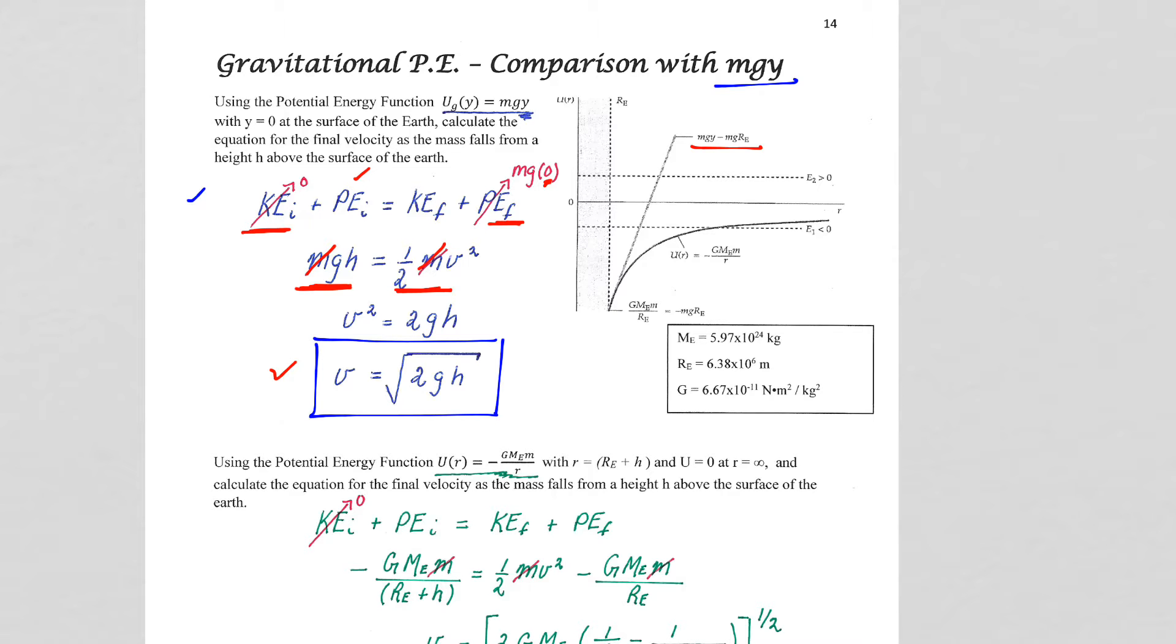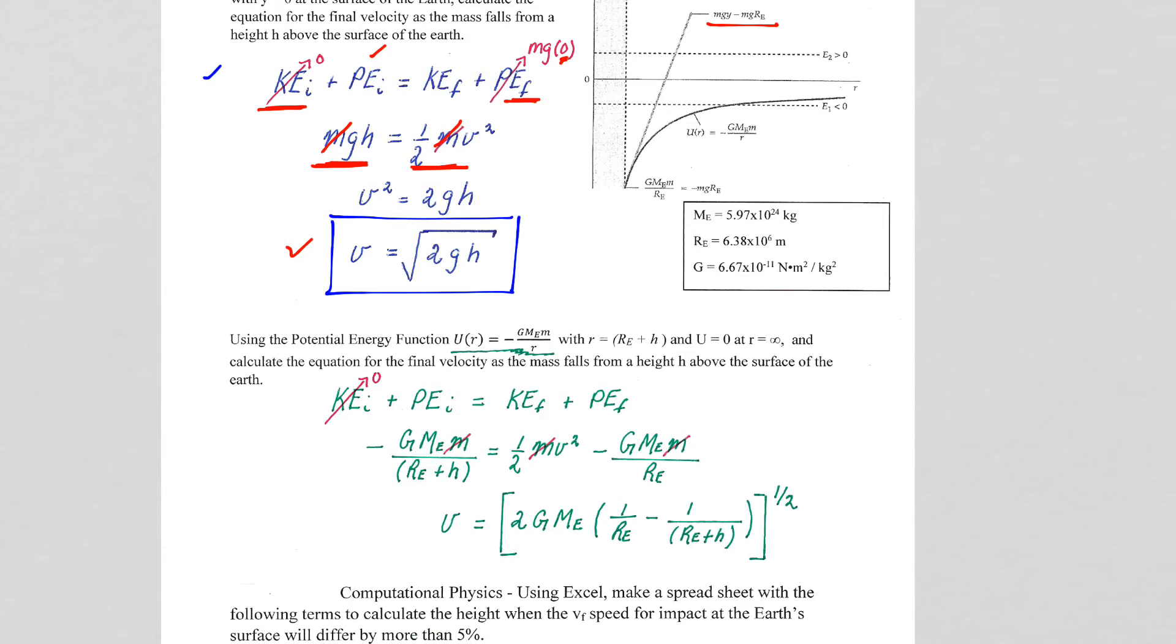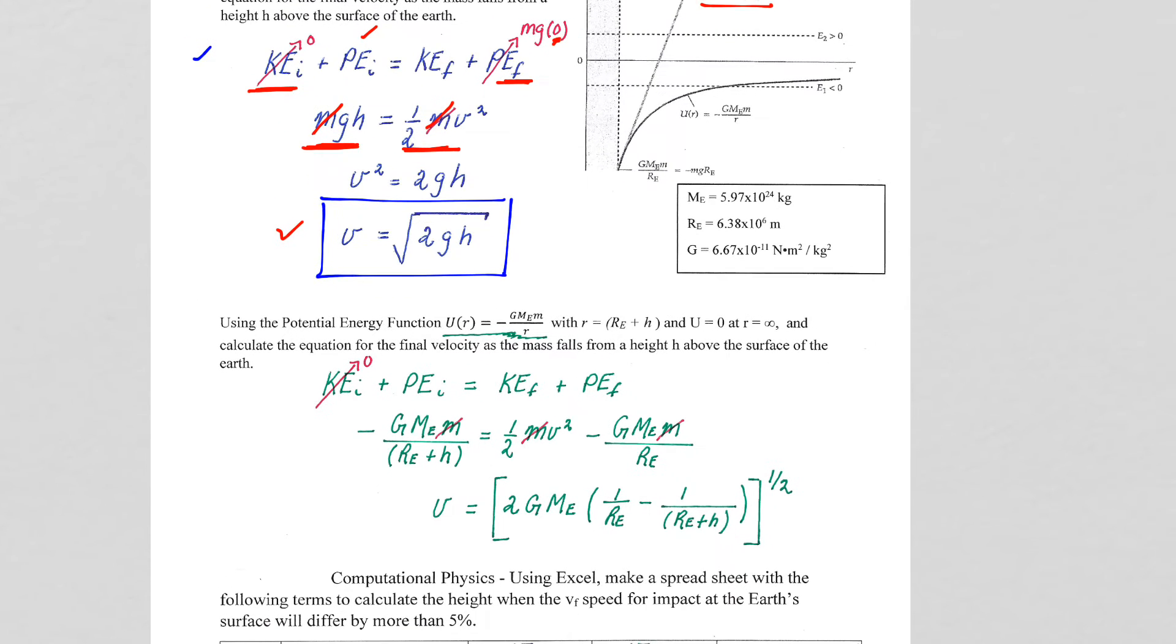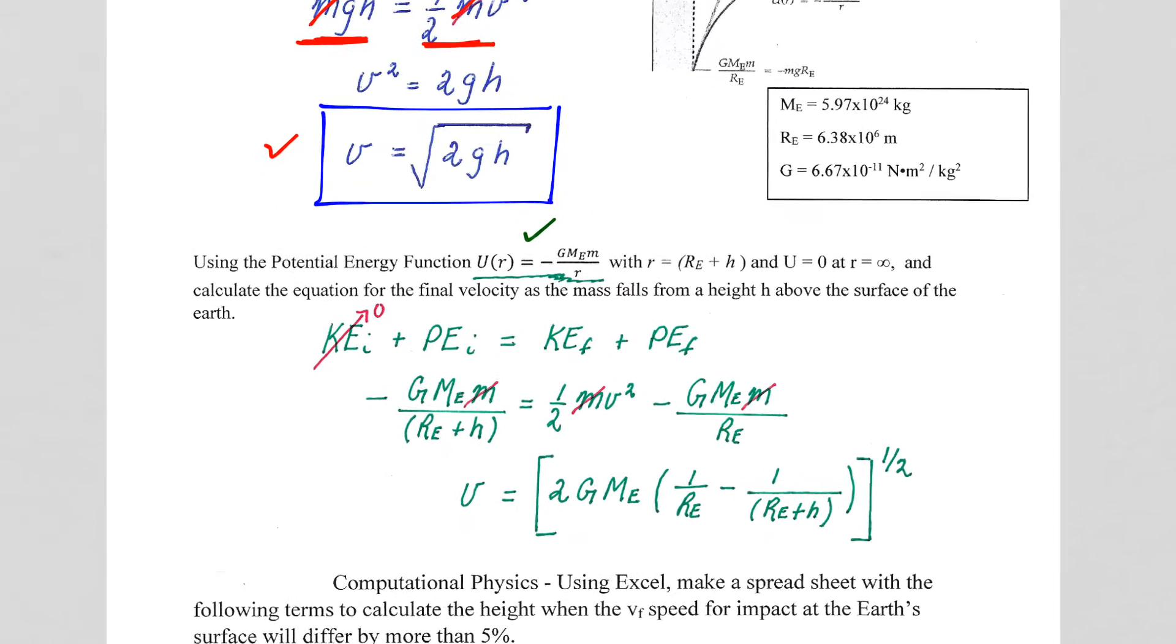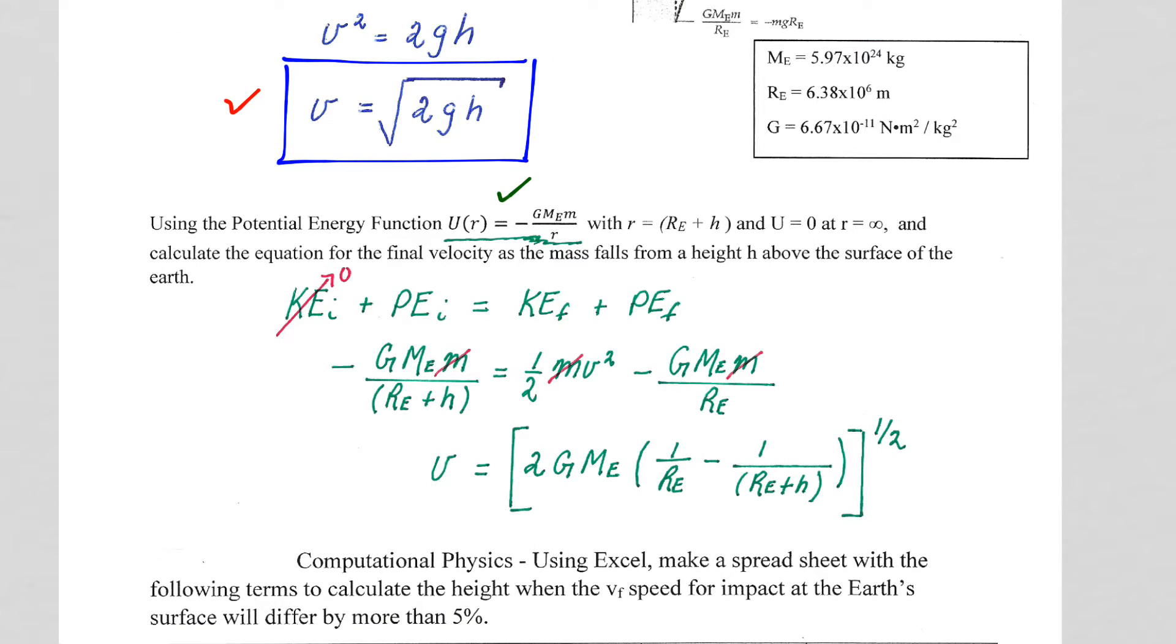And what we're going to do now is compare it to dropping the object and letting the potential energy function negative G, mass of Earth, mass of object that we drop, divided by r, the center of mass to center of mass distance between the object and the center of the Earth, govern the motion, govern the transfer of energy.